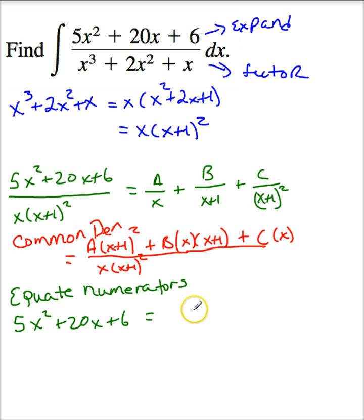Well, let me go on and multiply this out. This is going to be a x squared plus 2ax plus a plus b x squared plus b x plus c x.